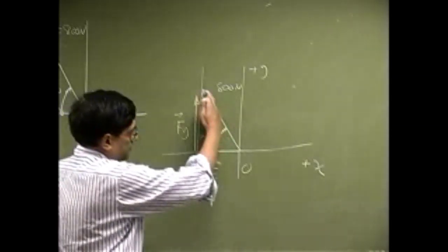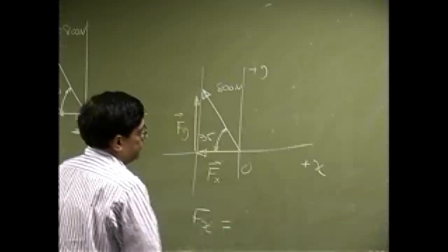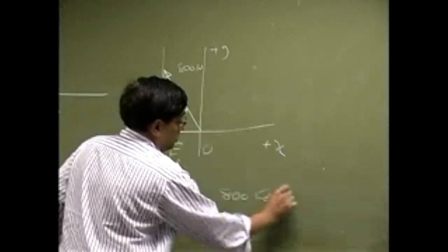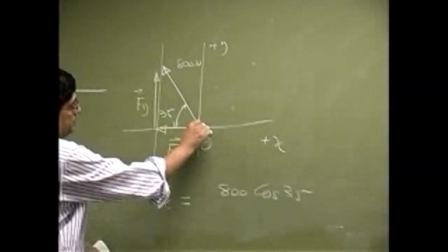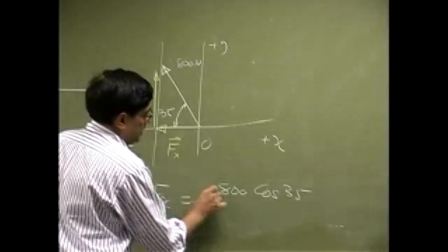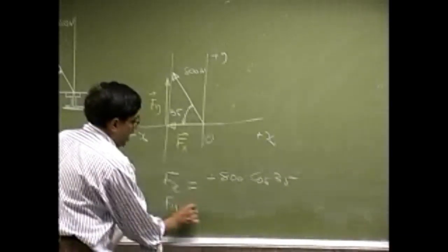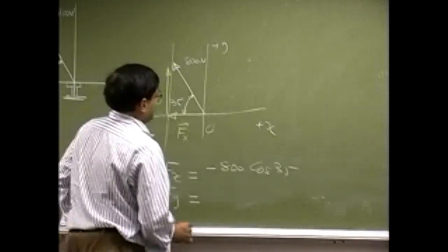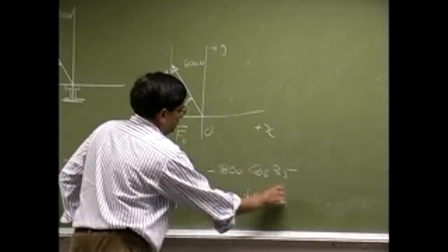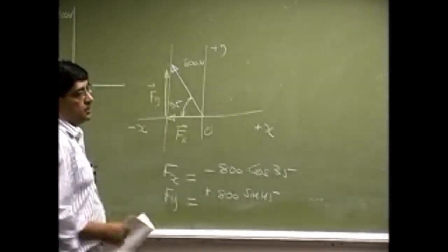Then from this triangle you have FX. It simply should be 800 cos 35 except it is in negative X direction you attach a negative. Then you have FY that is 800 sin 45. It is in positive direction you keep this as positive.